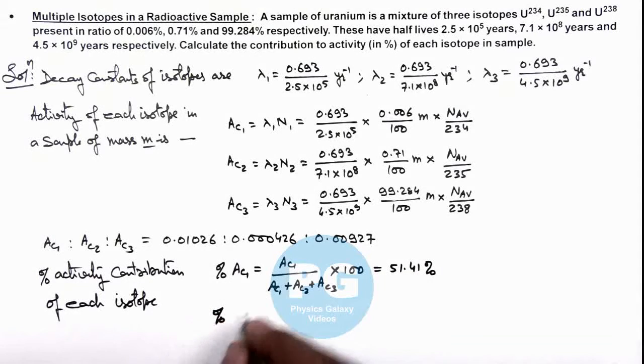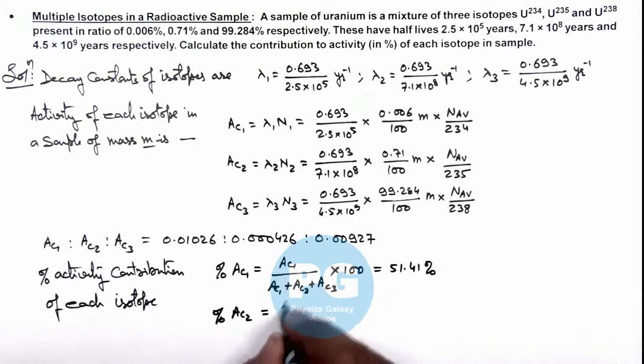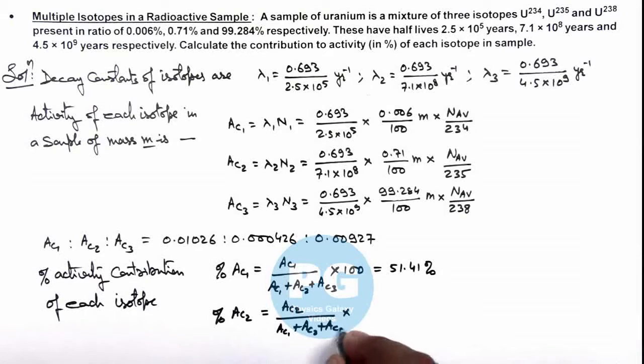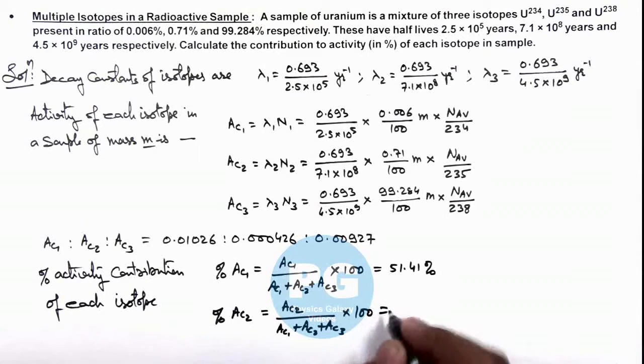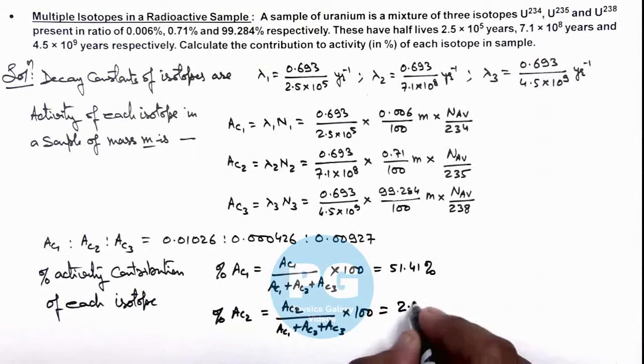Similarly, percentage contribution of activity 2 we can give as activity 2 divided by AC1 plus AC2 plus AC3 multiplied by hundred, and it comes out to be 2.13%.